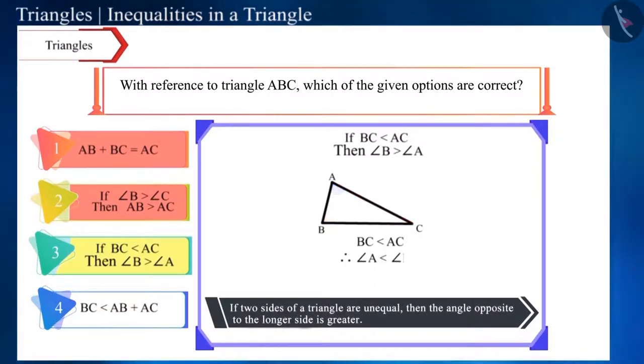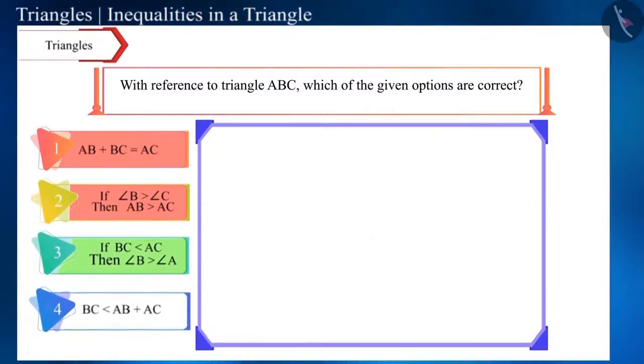Which means angle A will be smaller than angle B. Or, in other words, angle B will be greater than angle A. Therefore, this option is correct.